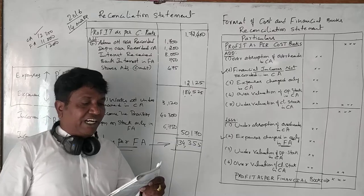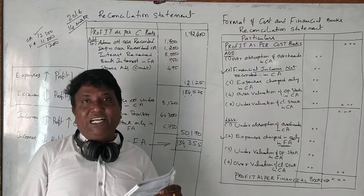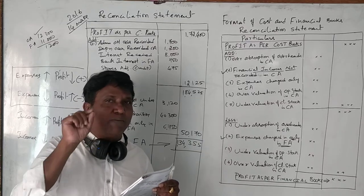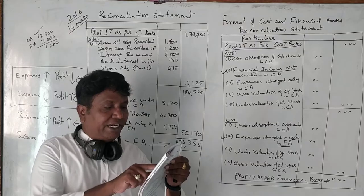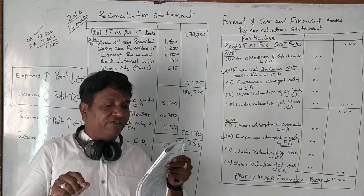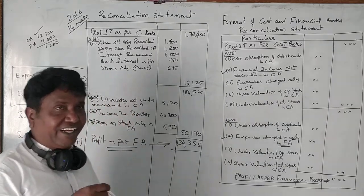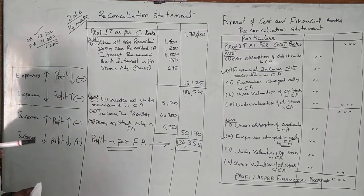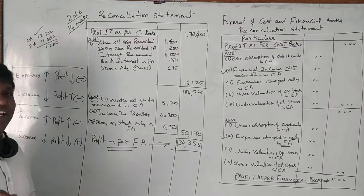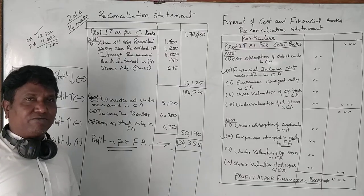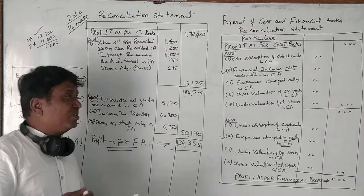Next item: depreciation charged in financial accounting is 11,000. Depreciation recovered in cost accounting — costing records 12,300. So in financial accounting, 11,000 is recorded, and in cost accounting, 12,300 is recorded. The difference arises because different methods may be used.